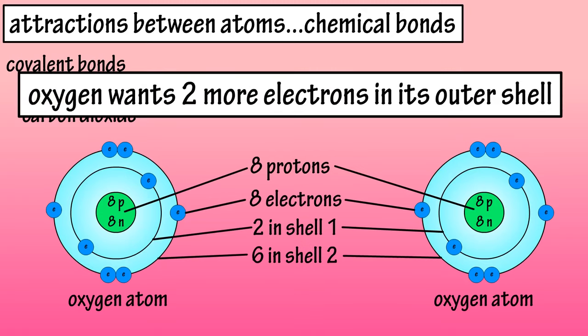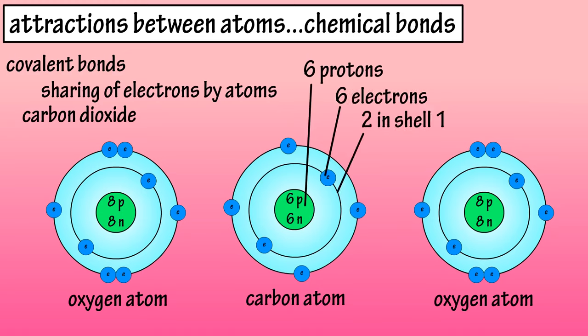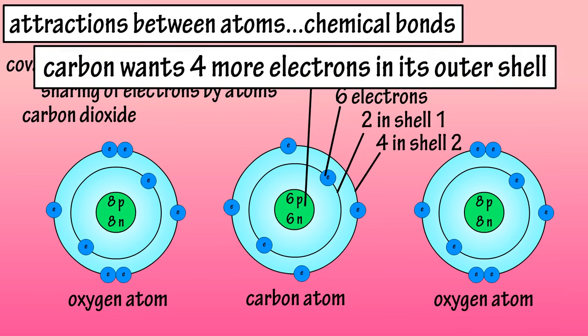So, oxygen atoms want 2 more electrons for their outer shell. Carbon has an atomic mass of 6. 6 protons and 6 electrons. 2 in the inner shell, and 4 in the outer shell. So, it wants 4 more electrons for its outer shell.